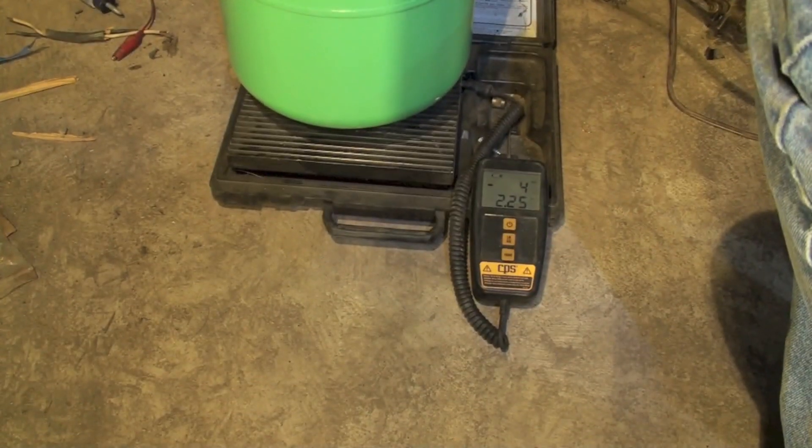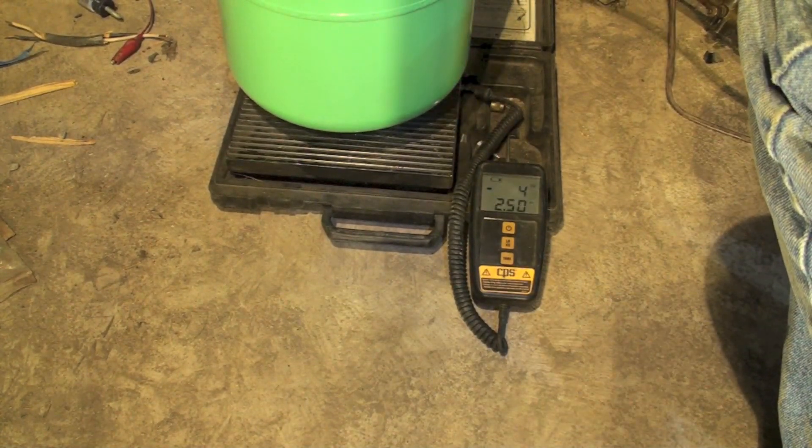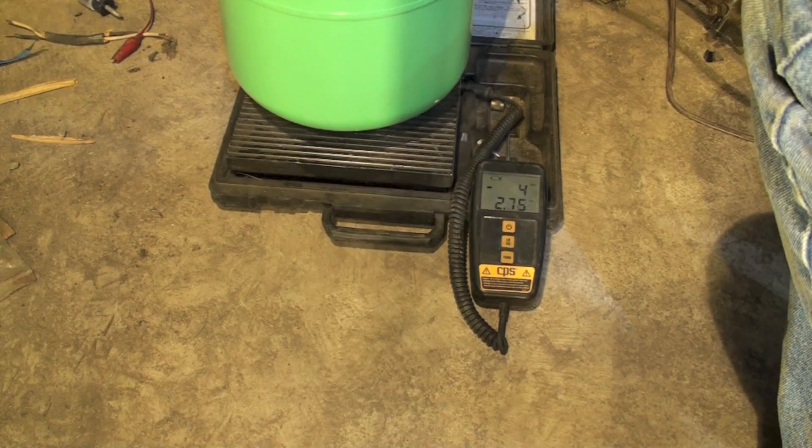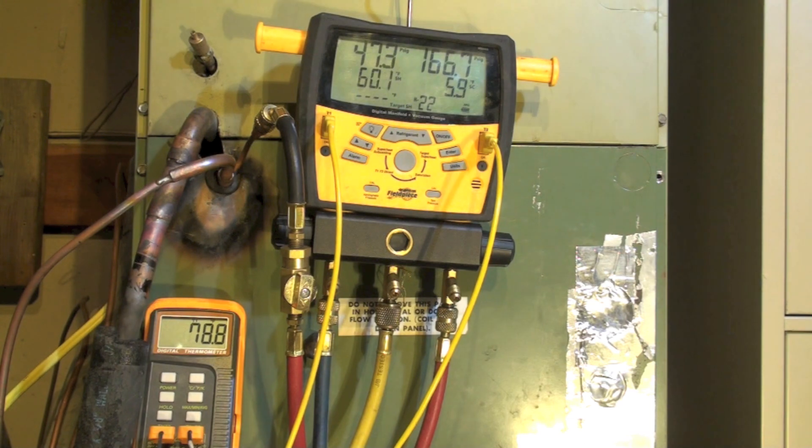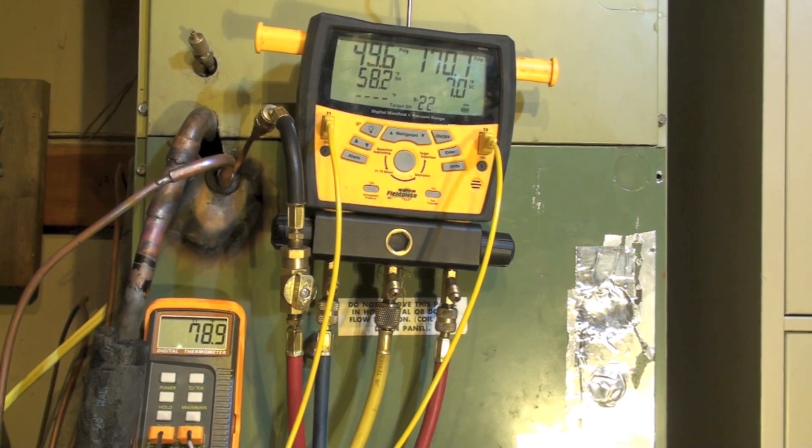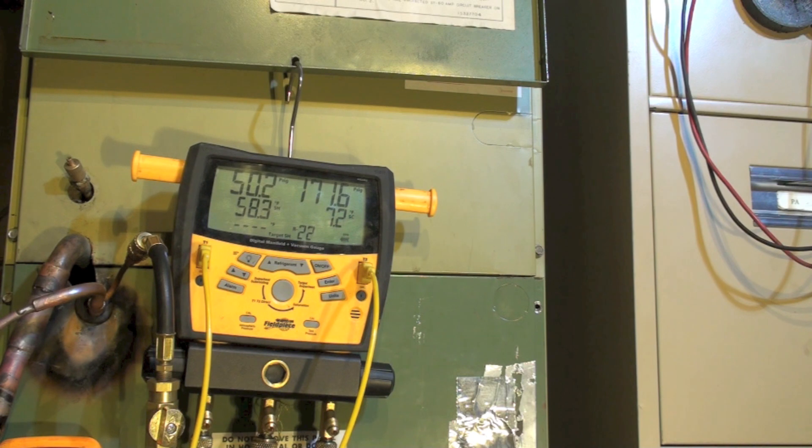I'm going to fire this machine off. Okay, now we have the machine running. We've got a return air temperature of about 79. If we look at the gauge set, we can see we have about 50 pounds low side. Superheat's out of sight, which would be normal.